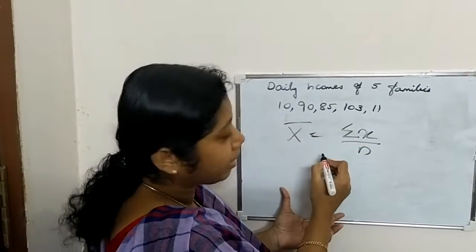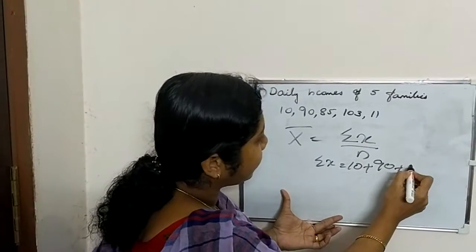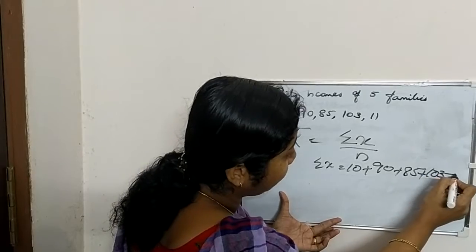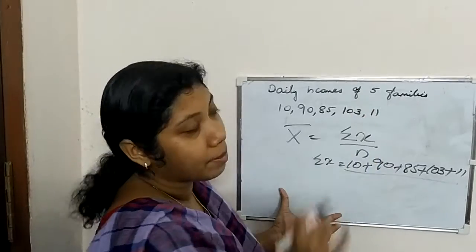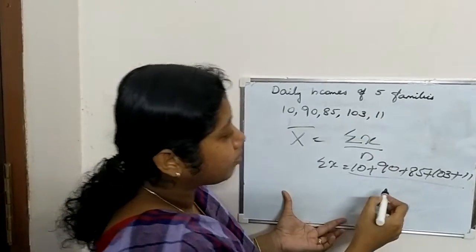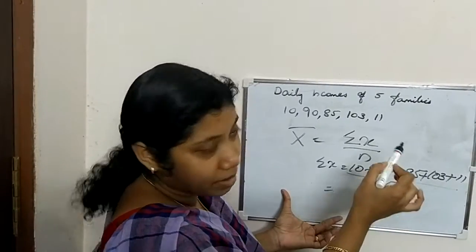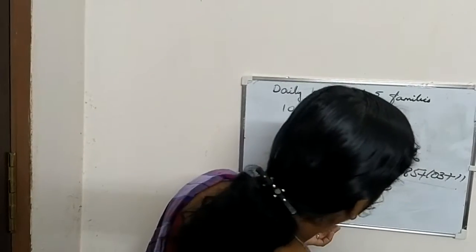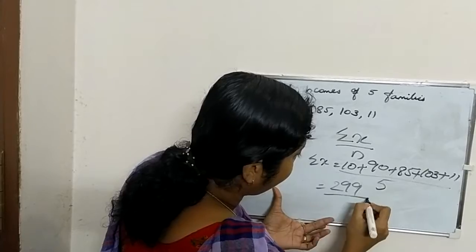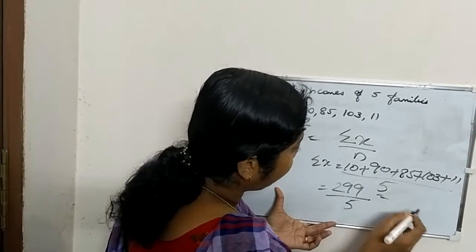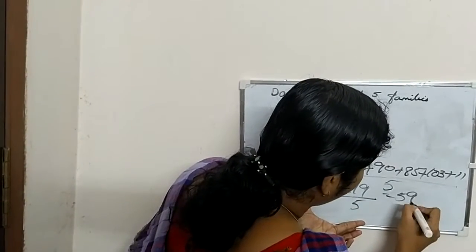Sigma x is equal to 10 plus 90 plus 85 plus 103 plus 11, divided by the number of items, which is 5 families. So: 10 plus 90 plus 85 plus 103 plus 11 divided by 5. The sum of these items is 299, and number of items is 5, so 299 divided by 5 gives the answer 59.8.